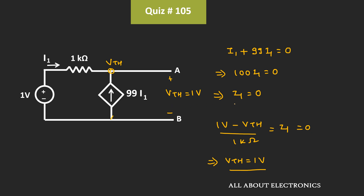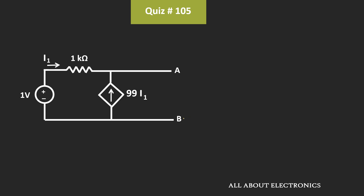Similarly, now let's find out the Thevenin's resistance. Here, as the circuit contains both independent as well as the dependent source, to find the Thevenin's equivalent resistance, first of all we will find the short-circuit current. That means we will short these two terminals and find the short-circuit current. The ratio of this Thevenin's equivalent voltage to this short-circuit current will give us the Thevenin's resistance.